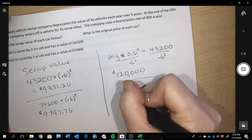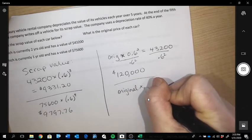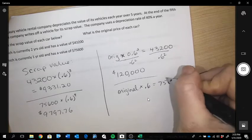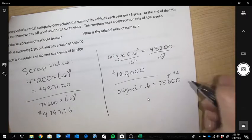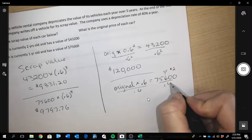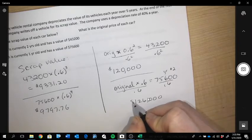The second car's original price got multiplied by 0.6 and ended up at $75,600 in year two. So if I divide by 0.6, that vehicle would have originally cost $126,000.